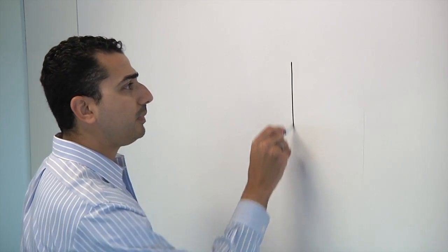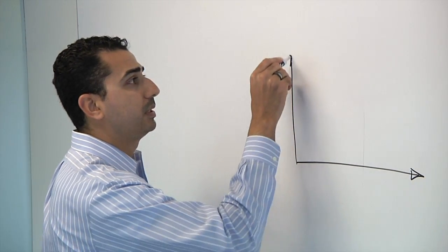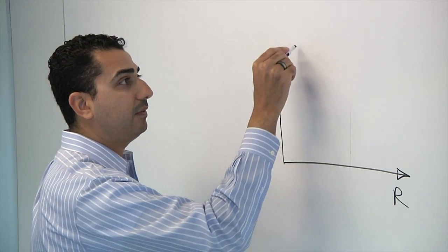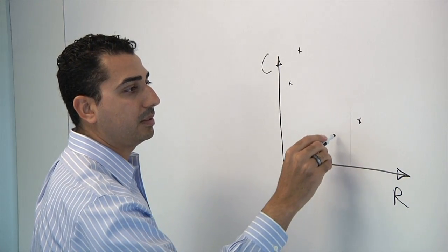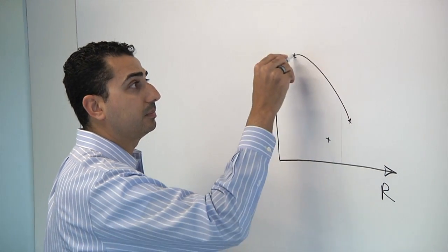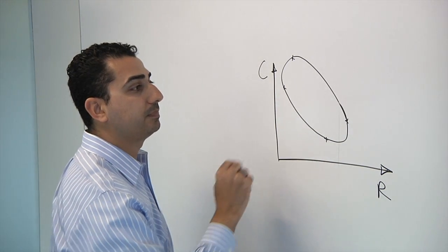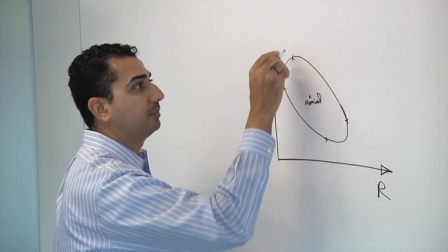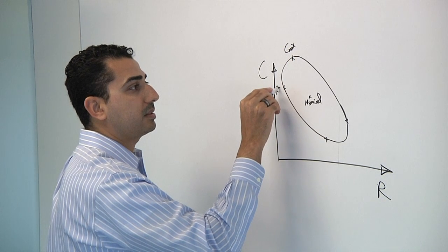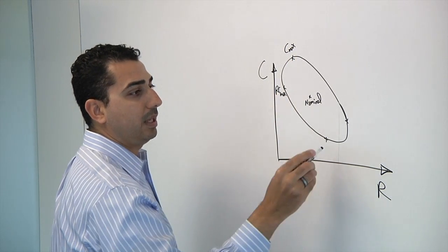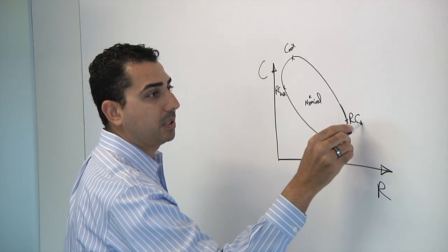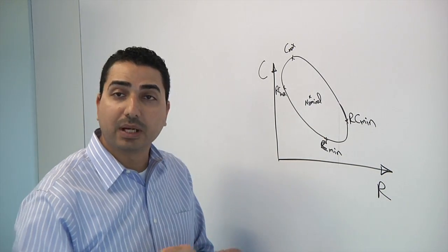Sure. So basically, for the normal nodes, if you draw the resistance and capacitance curve, you have four corners that reside on an ellipsoid, and you have the nominal corner. So if this is the nominal, you have a Cmax corner, RCmax corner, Cmin corner, and RCmin corner. And that's without any coloring.